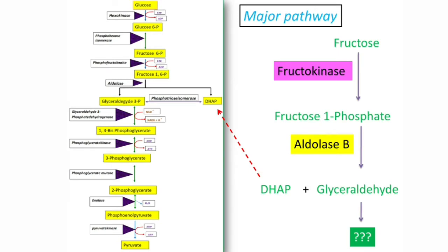Coming to the major pathway, this is major because most of the fructose is metabolized through this pathway. The main enzyme is fructokinase, which converts fructose to fructose-1-phosphate. This fructose-1-phosphate is converted into dihydroxyacetone phosphate (DHAP) plus glyceraldehyde by the action of enzyme aldolase B. There are two types of aldolase: A, present in glycolysis, and B, seen in fructose metabolism — converting fructose-1-phosphate to DHAP and glyceraldehyde.